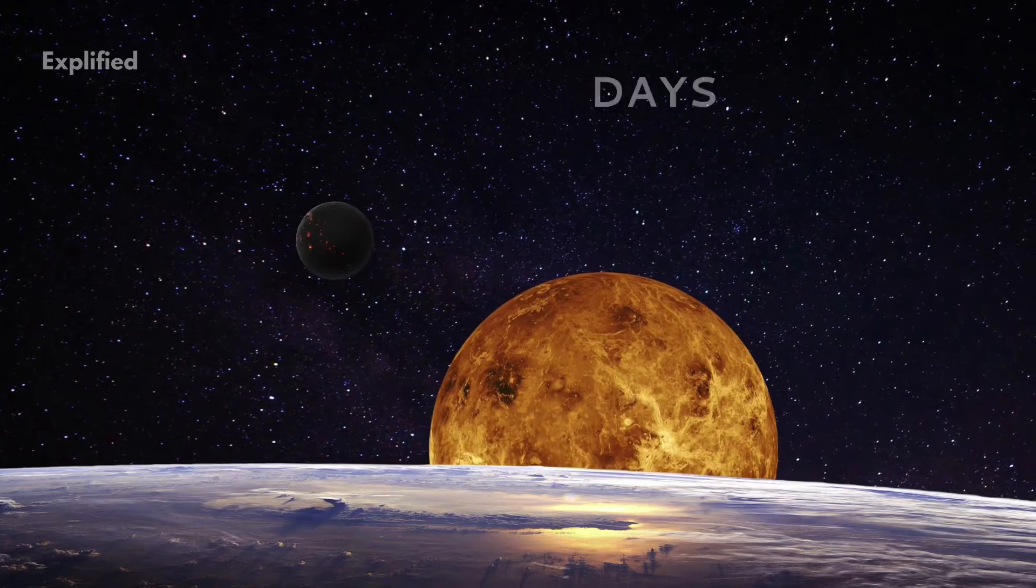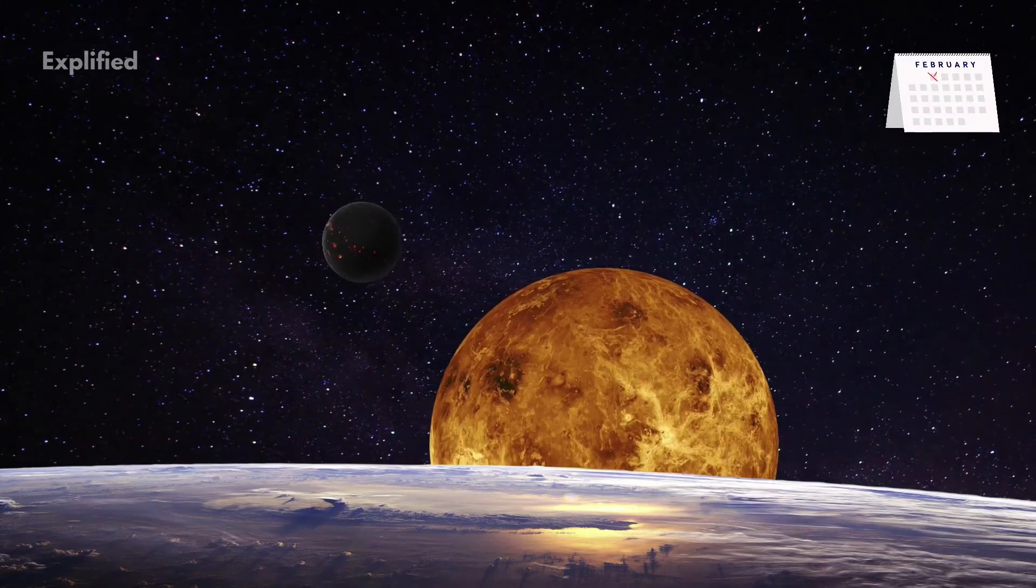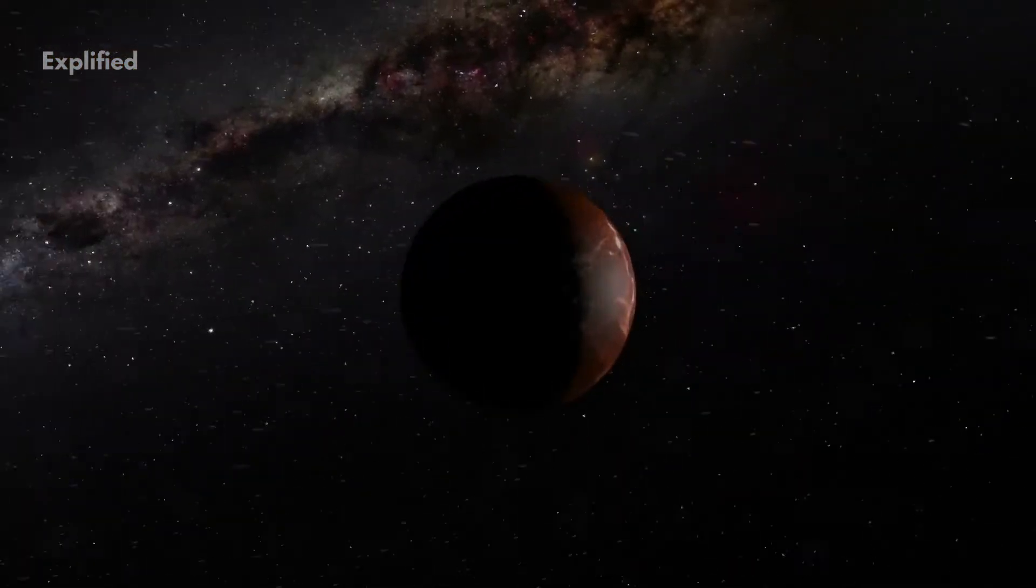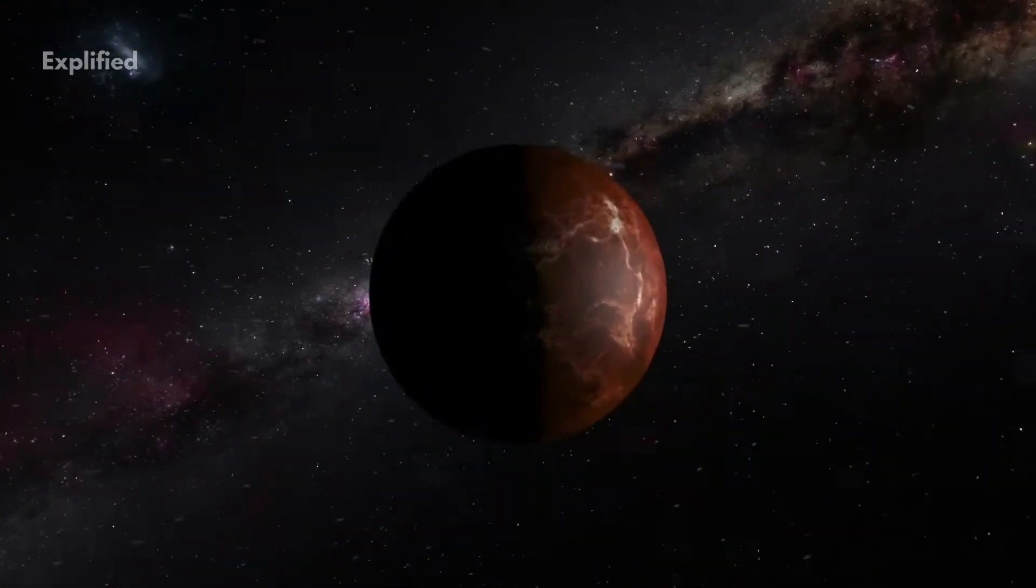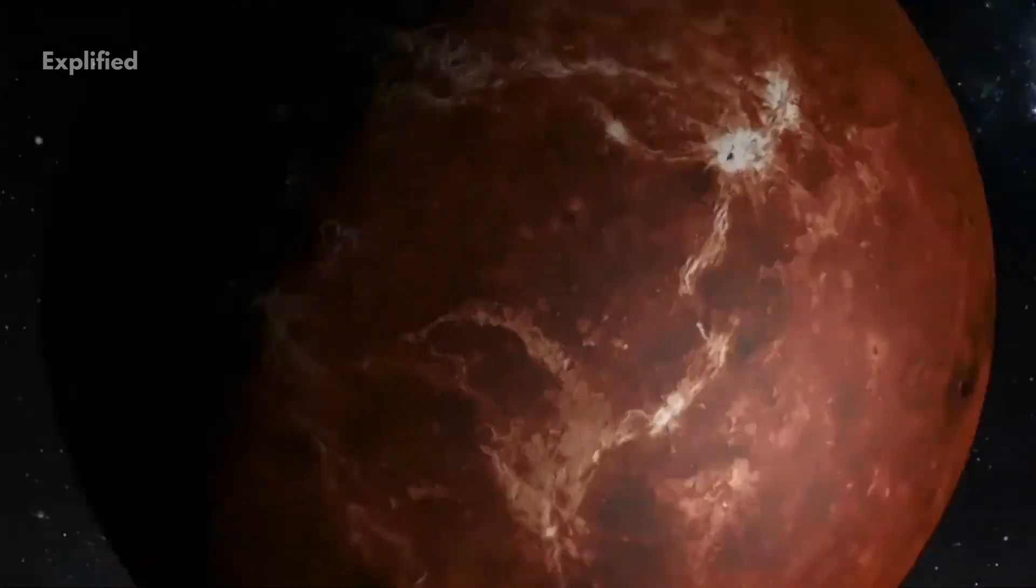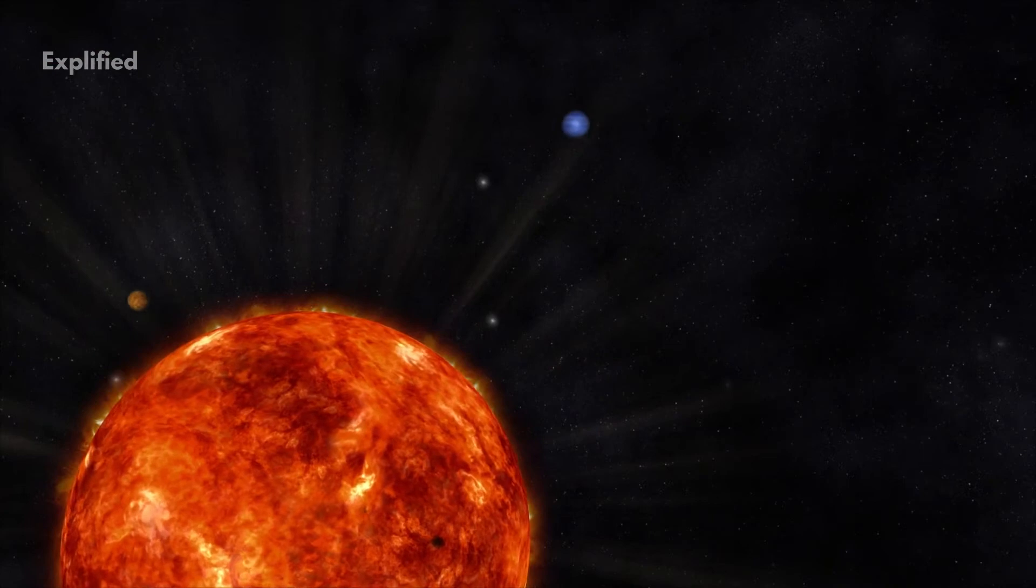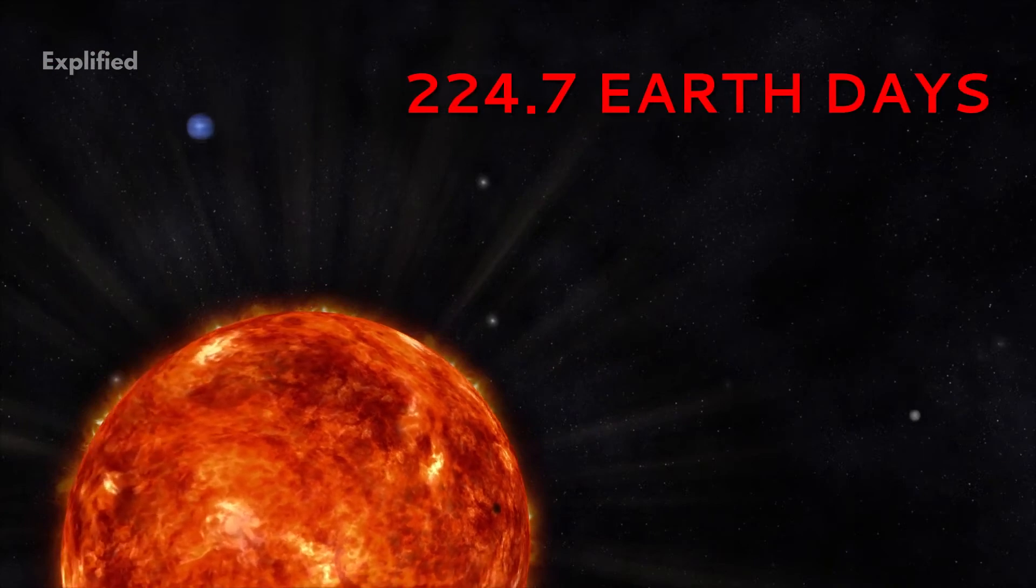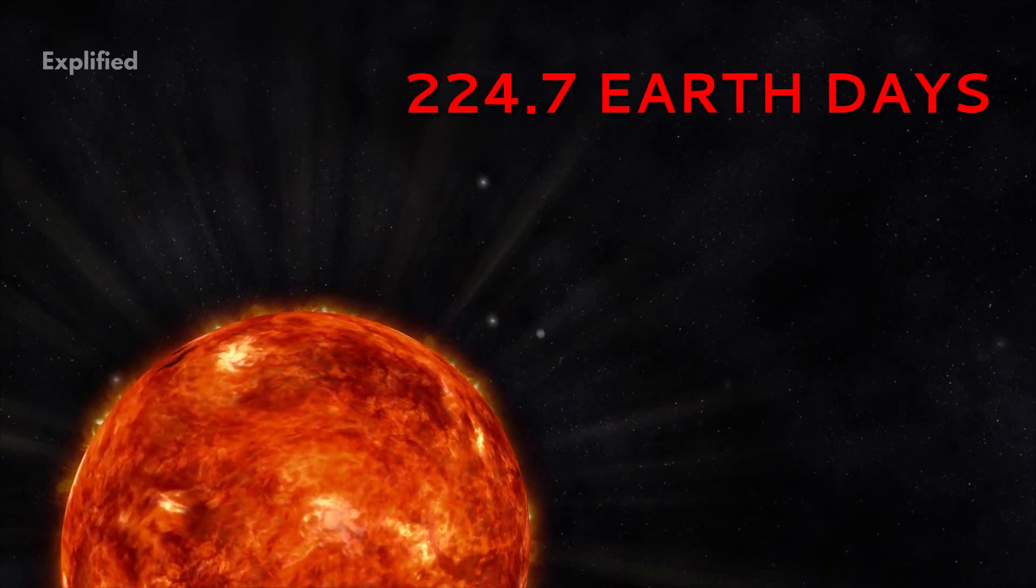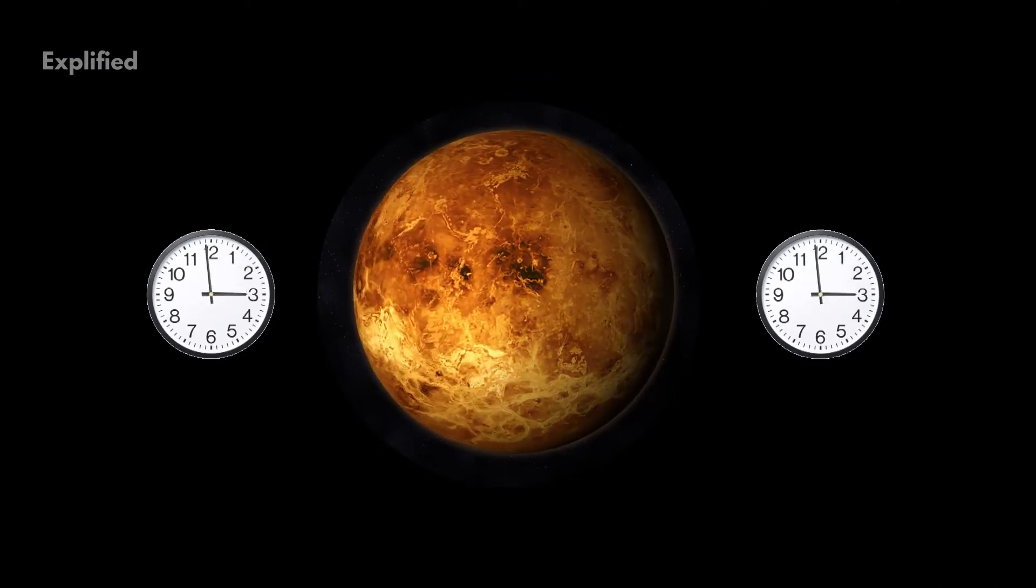Number 1. Days on Venus outlast years. Did you know that a year on Venus is shorter than a day? Strange, right? Yes, Venus takes less time to complete a revolution around the Sun than it takes to complete one rotation on its axis. It takes 243 Earth days to complete a rotation while only 224.7 Earth days to complete a revolution. That's the longest rotation period than any planet in the solar system.